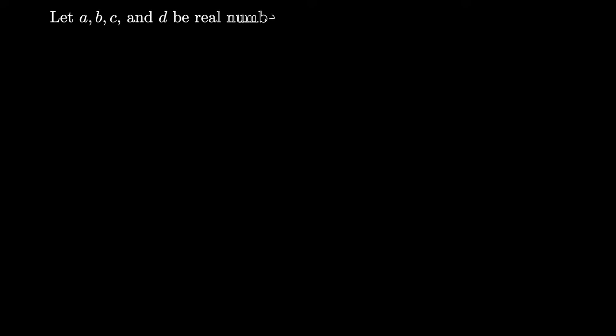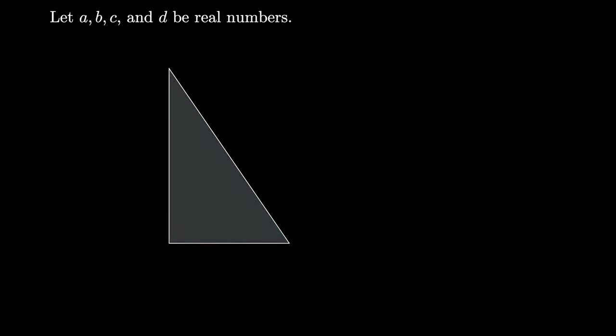Suppose that A, B, C, and D are all real numbers. Then we can build a right triangle whose leg lengths are given by the absolute value of B times the absolute value of C, and the absolute value of A times the absolute value of C.